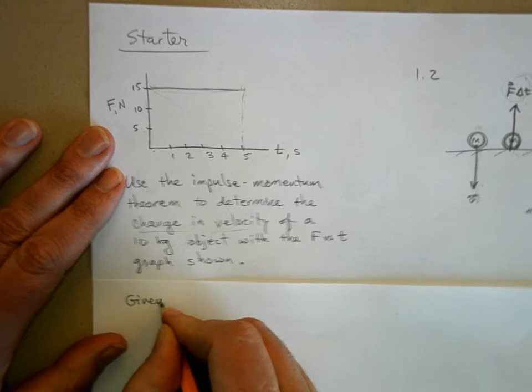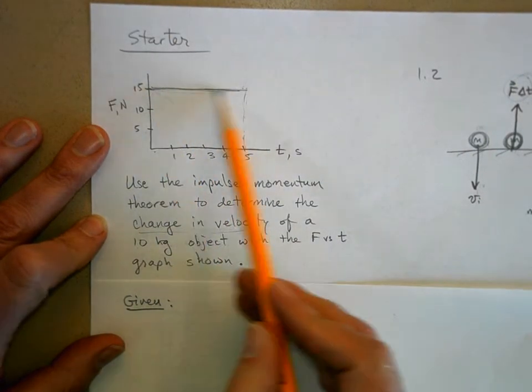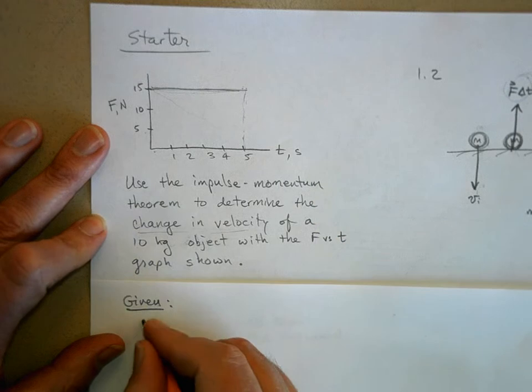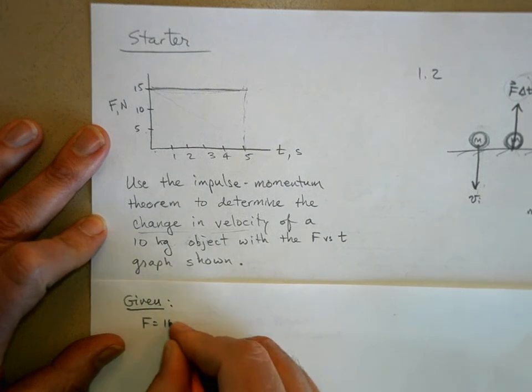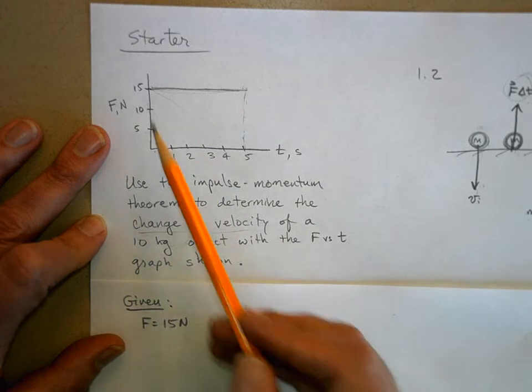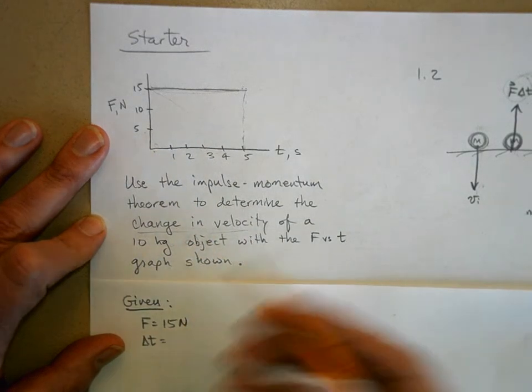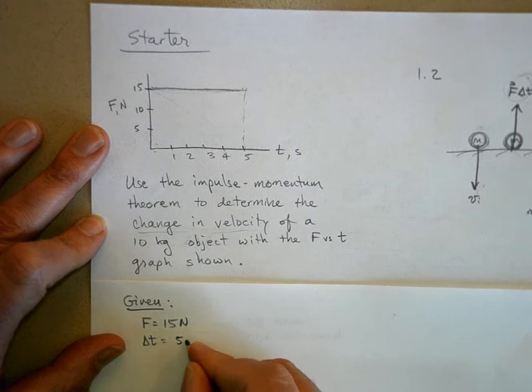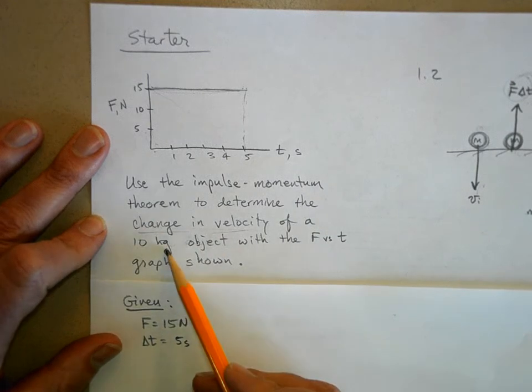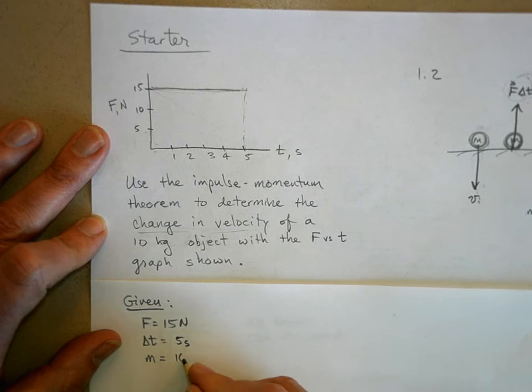Given. What are we given here? Well, the force is constant, right? So the force is 15 newtons. And how much time is this force applied? We'll call that delta t. You can call it t or delta t. That's 5 seconds. Now we also know the mass of the object. It's 10 kilograms.